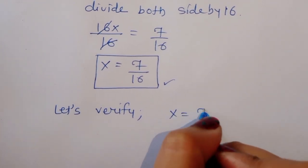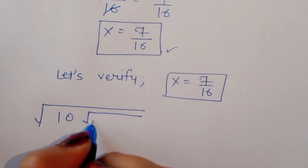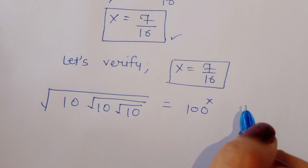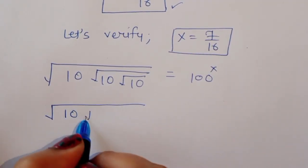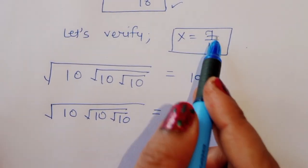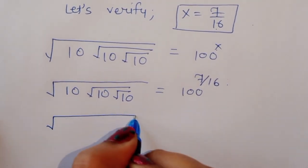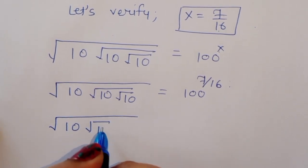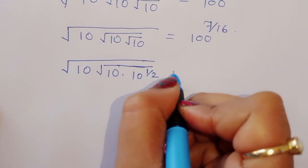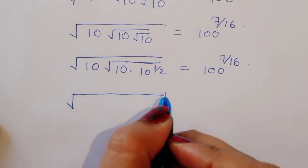Let's verify x is equal to 7 divided by 16. The question is: square root of 10, square root of 10, square root of 10, square root of 10, square root of 10, square root of 10 is equal to 100 power x, that is 100 raised to 7 divided by 16. We can write square root of 10 times this square root of 10, that is 1 by 2, is equal to 100 power 7 upon 16.